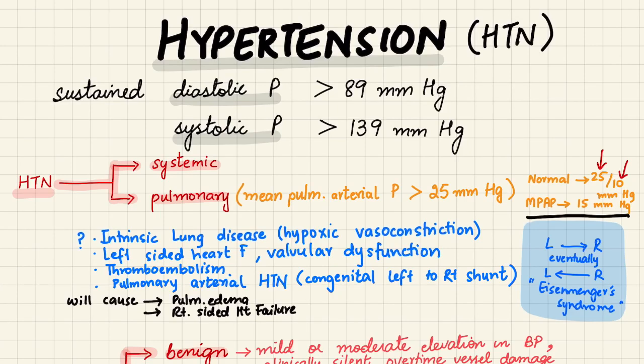Now for just a recap: hypertension, also known as elevated blood pressure, is a long-term medical condition in which the blood pressure in the arteries is persistently elevated.